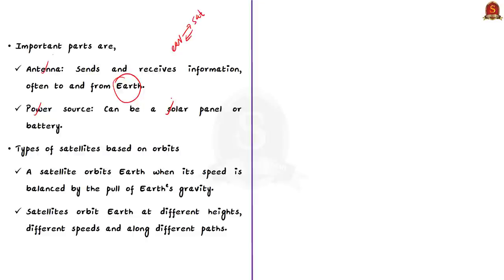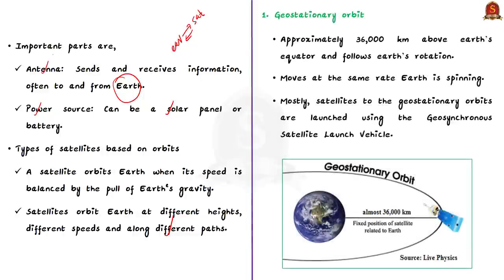Further, satellites orbit Earth at different heights, different speeds, and along different paths, which we call orbits. The most common types of orbit are geostationary and polar, though others include geotransfer orbit and low Earth orbit. In today's discussion, we shall understand the first two types: geostationary and polar.